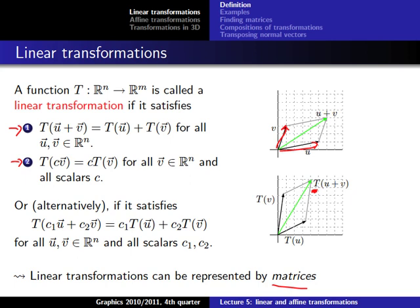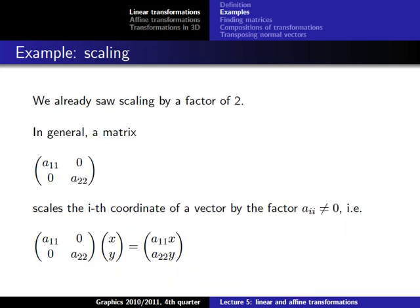Alternatively, we can combine these two conditions into one combined condition. You can formally prove that these are equivalent — if it fulfills the combined condition, it also fulfills the other two, and vice versa. So this is an equivalent definition of a linear transformation. Let's look at some examples — we already saw scaling by a factor of two.